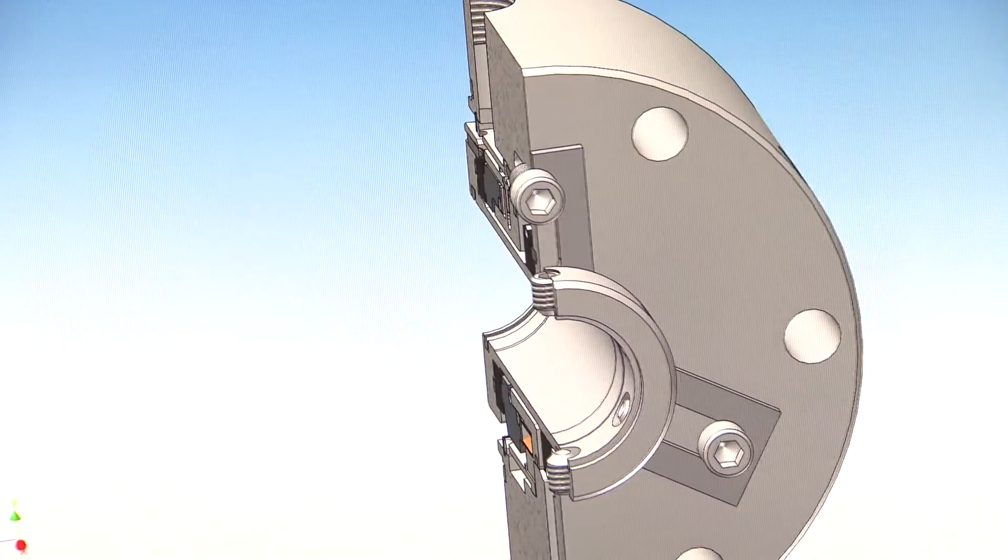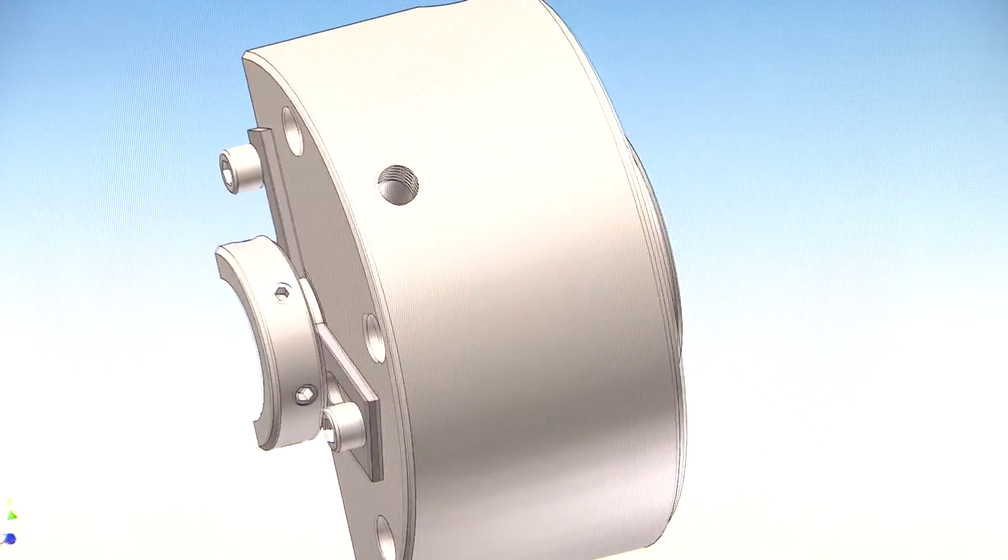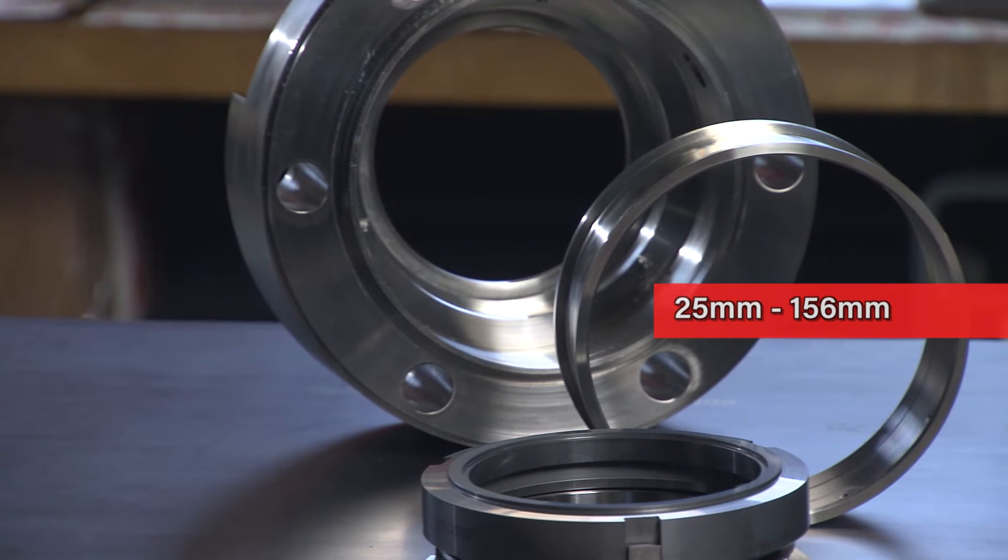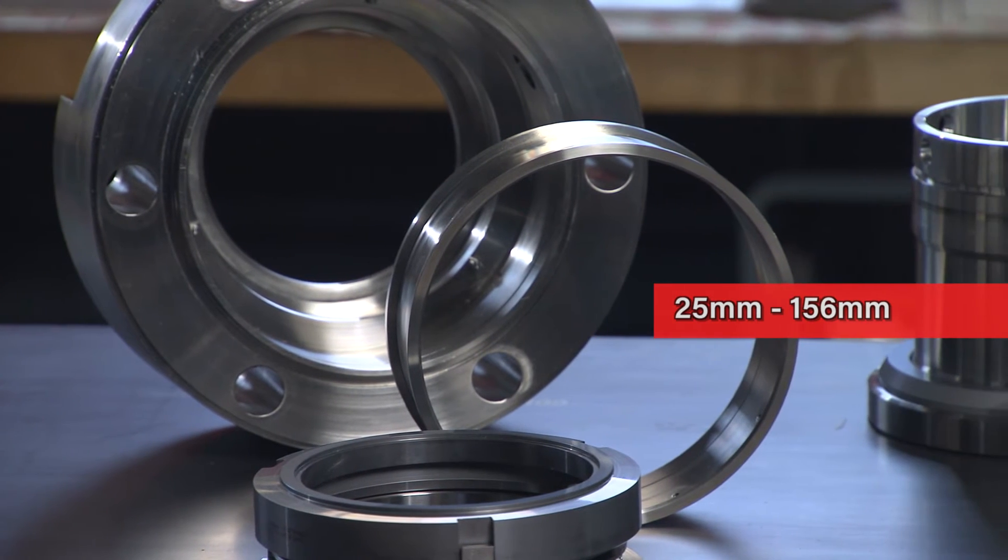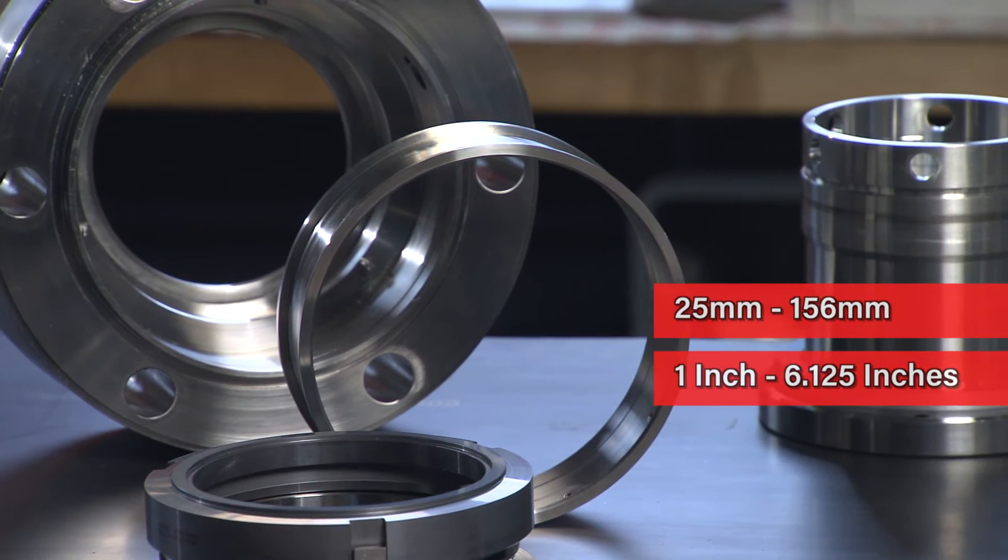If that weren't enough, the HSH seal can also handle the widest standard shaft size range among engineered seals, ranging from 25 millimeters to 156 millimeters, 1 to 6.125 inches.